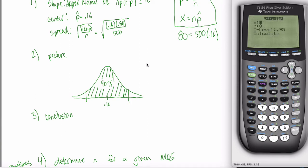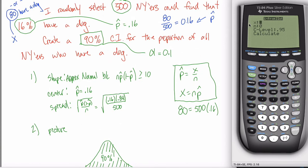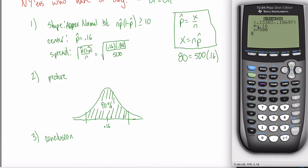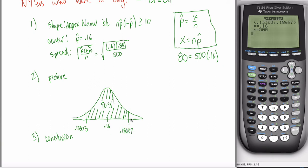Select 1-PropZInt on your calculator. It asks for only three things: X, n, and the confidence level. Be careful — X is the number of people that own a dog, not the proportion. Don't put in 0.16; you'll get an error. X = 80. n = 500. Confidence level = 90%. Hit calculate and it spits out the bounds: 0.13303 and 0.18697. That's everything you need for your picture.